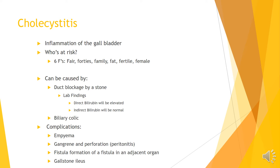Biliary colic can also be a cause of cholecystitis. Initial complications can include empyemas, gangrene, and perforation, which ultimately can lead to peritonitis, because inflammation in our peritoneal cavity can be caused by any sort of perforation within our abdominal cavity. Additional complications include fistula formation within an adjacent organ, or gallstone ileus.